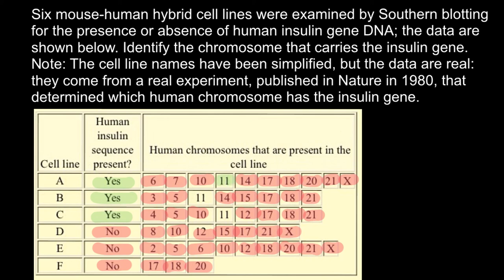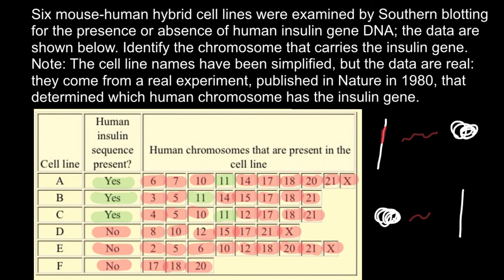We are now left with only one chromosome: chromosome number 11. All three positive cell lines — A, B, and C — have this chromosome. We have found that human chromosome 11 carries the gene that codes for this protein. That is our answer today. Basically, we used reverse engineering: the normal flow of genetic information goes from a gene on the chromosome to messenger RNA, which the ribosome uses to make a protein. But in our case, we started from the final product — the protein — and traced back to find which chromosome carries the gene that specifies it.